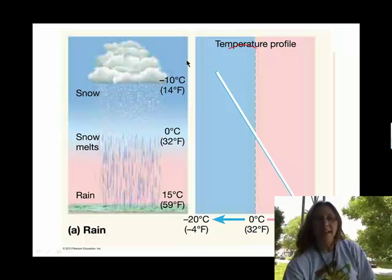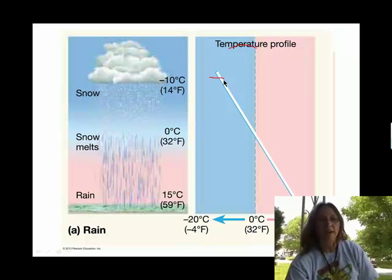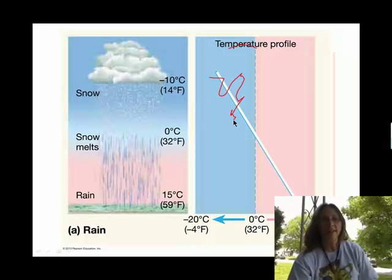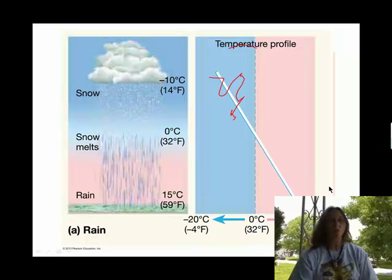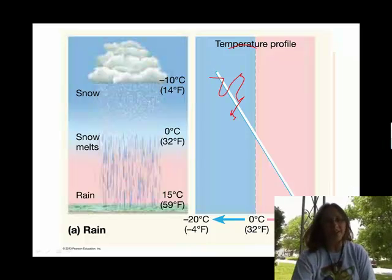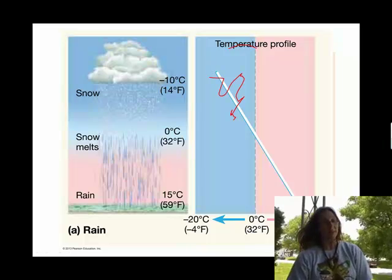So basically what this is saying is this will fall as ice crystals, and then at some point it reaches a temperature warm enough that those ice crystals will melt. And so this is an example where we get the precipitation as rain. Not too complicated, right?